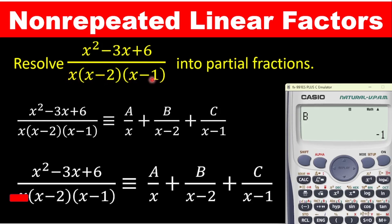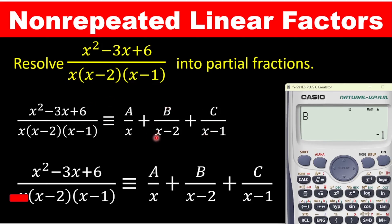The first x will be given a numerator of A, so on the right hand side we have A over x. The second factor, x minus 2, will be given a numerator of B, so we have plus B over x minus 2. The third factor, x minus 1, will have a numerator of C, so we have plus C over x minus 1. This is the partial fraction setup you need to do manually first, and then the calculator will make subsequent steps easier.